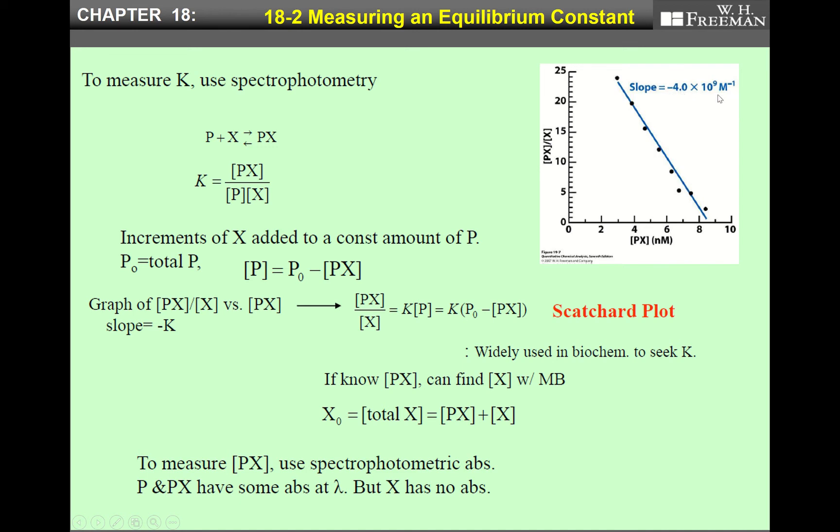This is an example. As we expected, the slope is negative, but this value is the equilibrium constant. This is called a Scatchard plot and is widely used in biochemistry to seek equilibrium constant. If we know the concentration of PX, you can find X with a mass balance equation. X₀ is total concentration of X, which is the sum of PX and X.